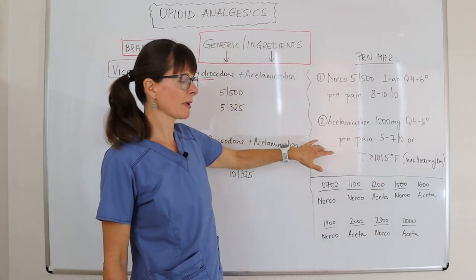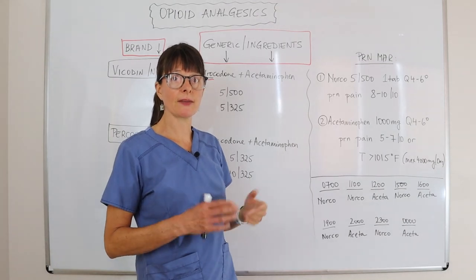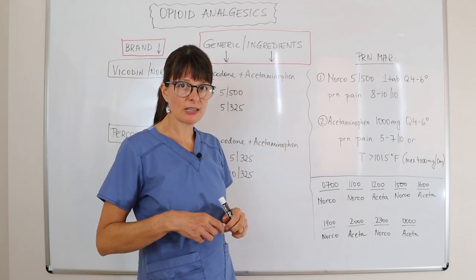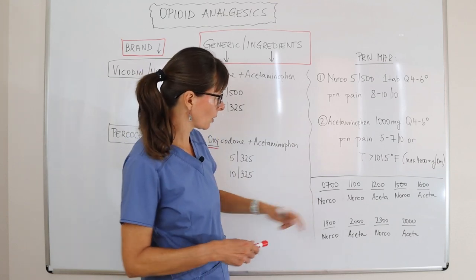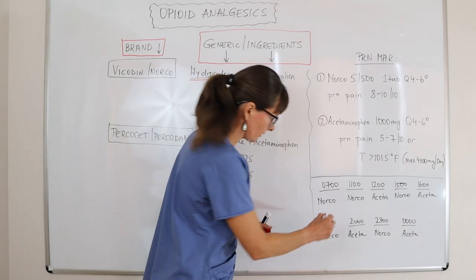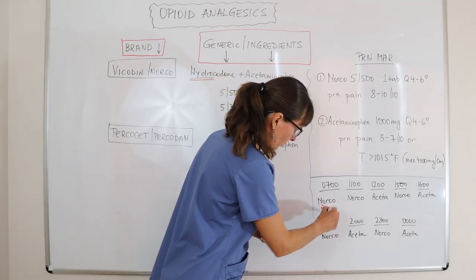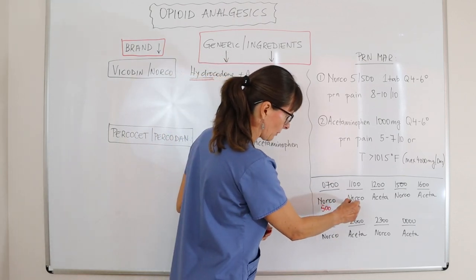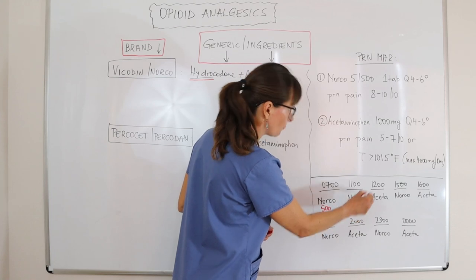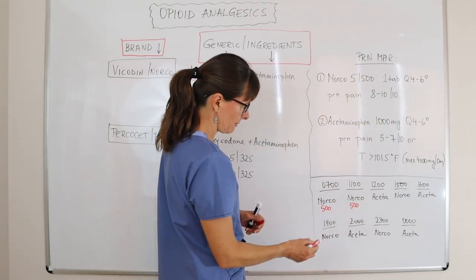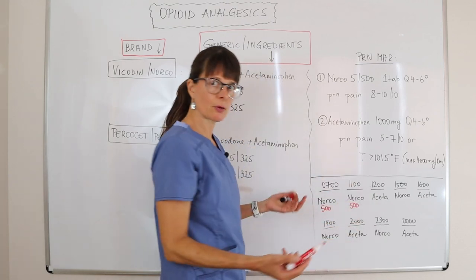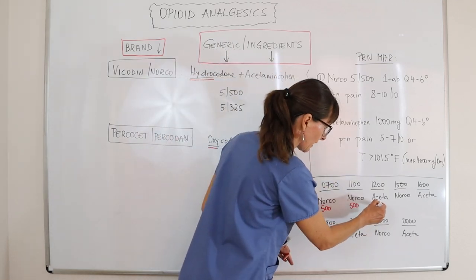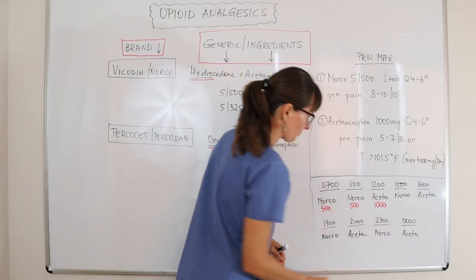Let's say this patient just had surgery, is in pain, and is also starting to develop a fever. At 7 o'clock, we give them a Norco — that's 500 milligrams of acetaminophen. At 11 o'clock, they still have pain, so we give them another Norco — another 500 milligrams. At 12 o'clock, they're running a fever, so we give them 1,000 milligrams of acetaminophen for that fever.